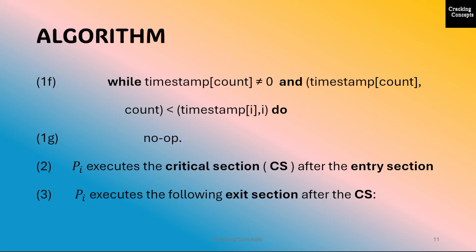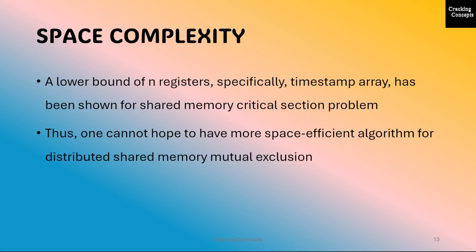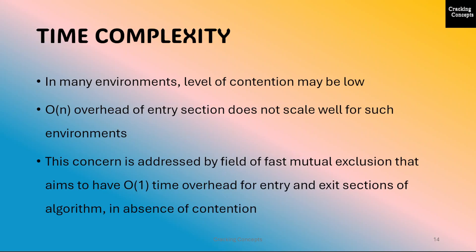Now we will look into the space complexity of this algorithm. A lower bound of n registers — specifically the timestamp array — has been shown for the shared memory critical section problem. Thus one cannot hope to have a more space-efficient algorithm for distributed shared memory mutual exclusion. Looking into the time complexity: in many environments the level of contention may be low, and the O(N) overhead of the entry section does not scale well for such environments. This concern is addressed by the field of fast mutual exclusion, which aims for O(1) time overhead for the entry and exit sections in the absence of contention.